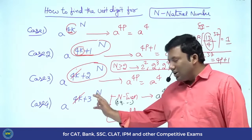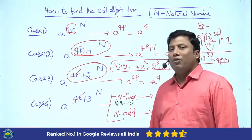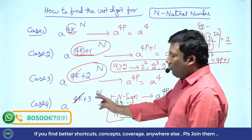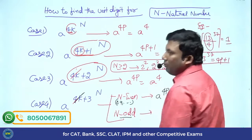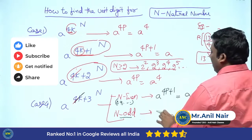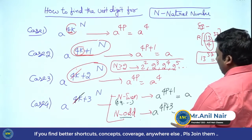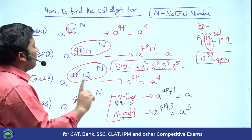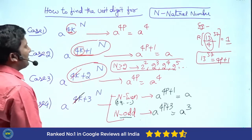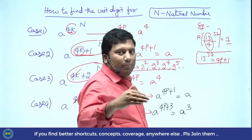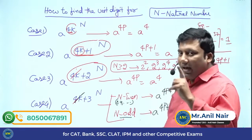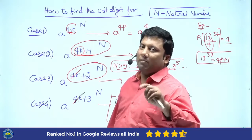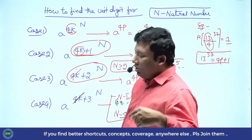If N is odd, take N=1: 3 to the power 1 is 3, giving remainder 3. 3 cubed is 27, 4 sixes are 24, remainder 3. So A power 4p plus 3 gives answer A cubed. All cases we got. Now you will realize why I took the generic cyclicity as 4 — if it is a power to the power to the power, this is the process.